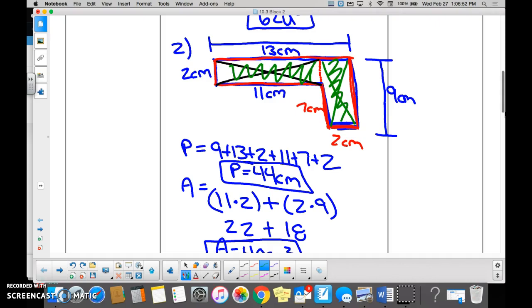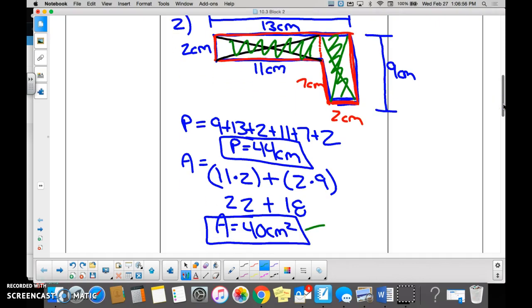We found the area of each of the rectangles to come up with 40 centimeters squared. I'm not going to go through this one as thoroughly. And we've added up all of the sides. Everyone's eyes still up here? Cool.